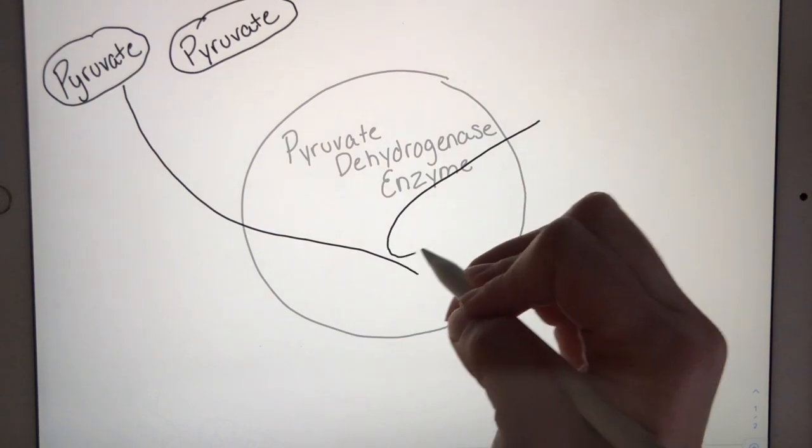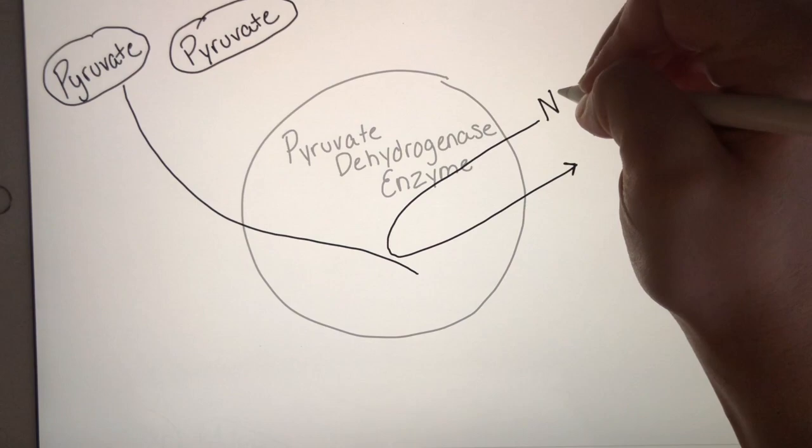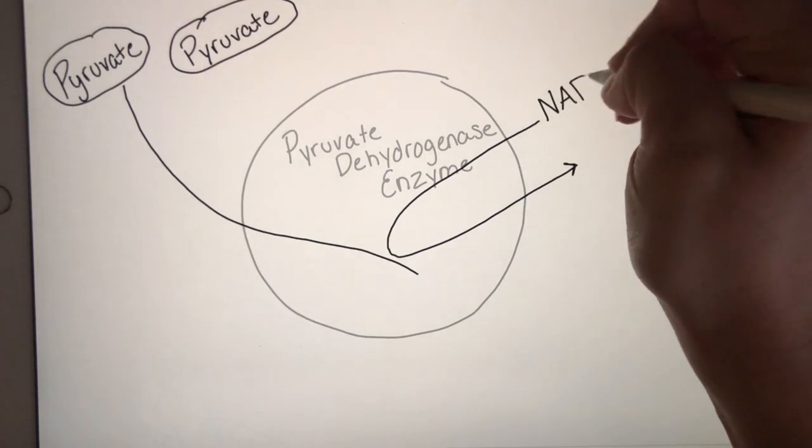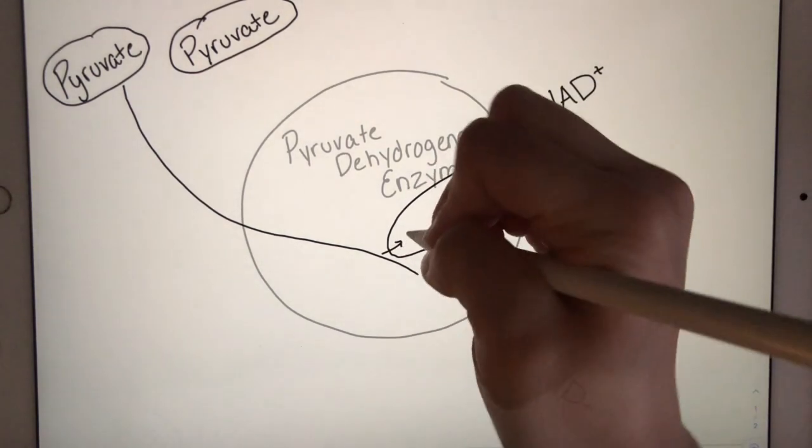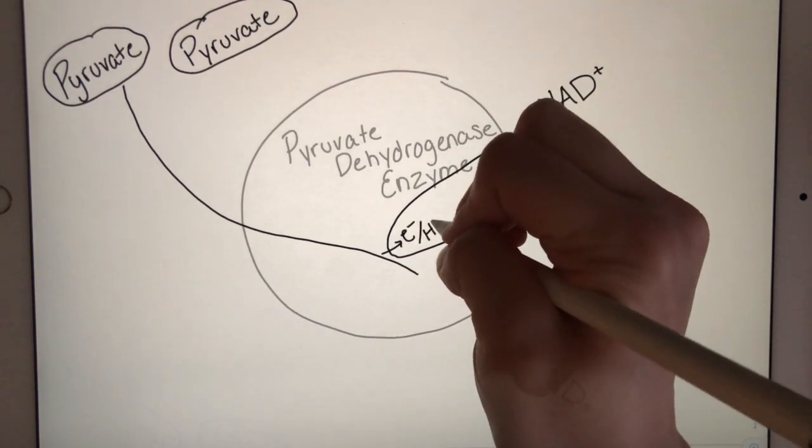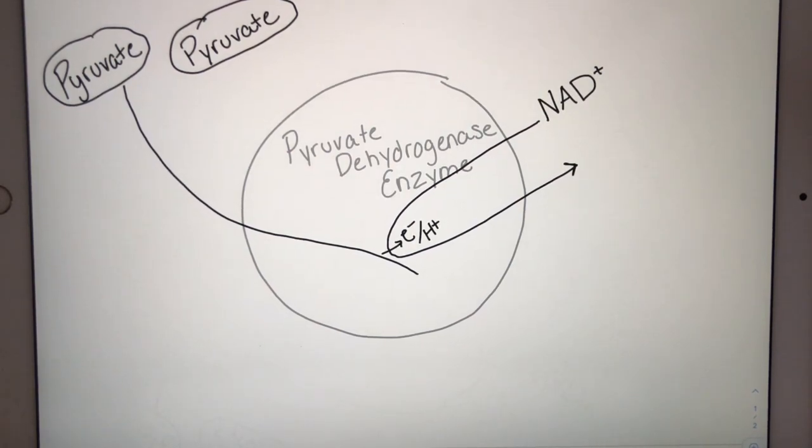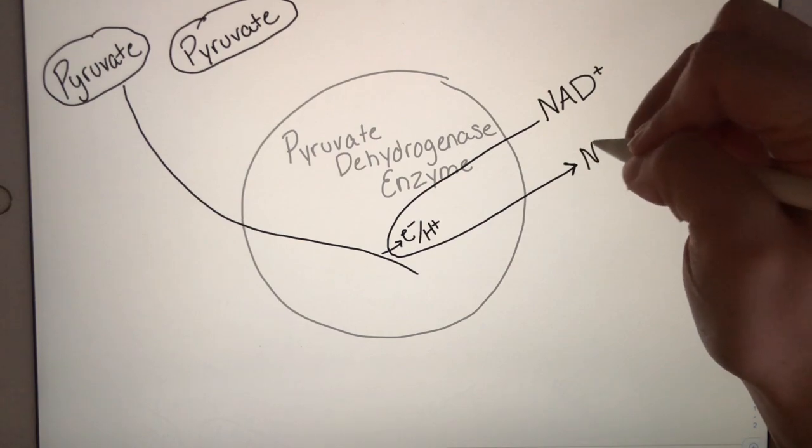At this enzyme, a molecule of NAD plus will pick up an electron and a hydrogen ion. Remember, those frequently travel together in redox reactions. And when it does that, you wind up with NADH.